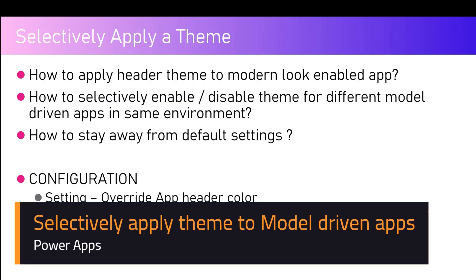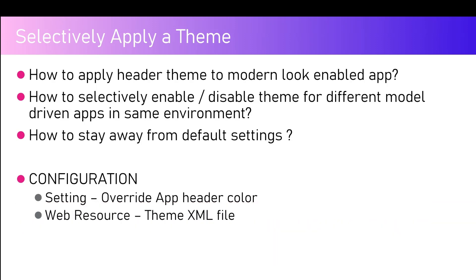In this video I'm going to talk about how to selectively apply a theme to a modern look model-driven app. In my previous video I covered how to apply a theme to a model-driven app with the modern look enabled. The issue with that approach is that when you apply a theme to a model-driven app, any model-driven app within that specific environment will get that theme. So if you have 10 model-driven apps in an environment and you change the theme for one, it applies to all.